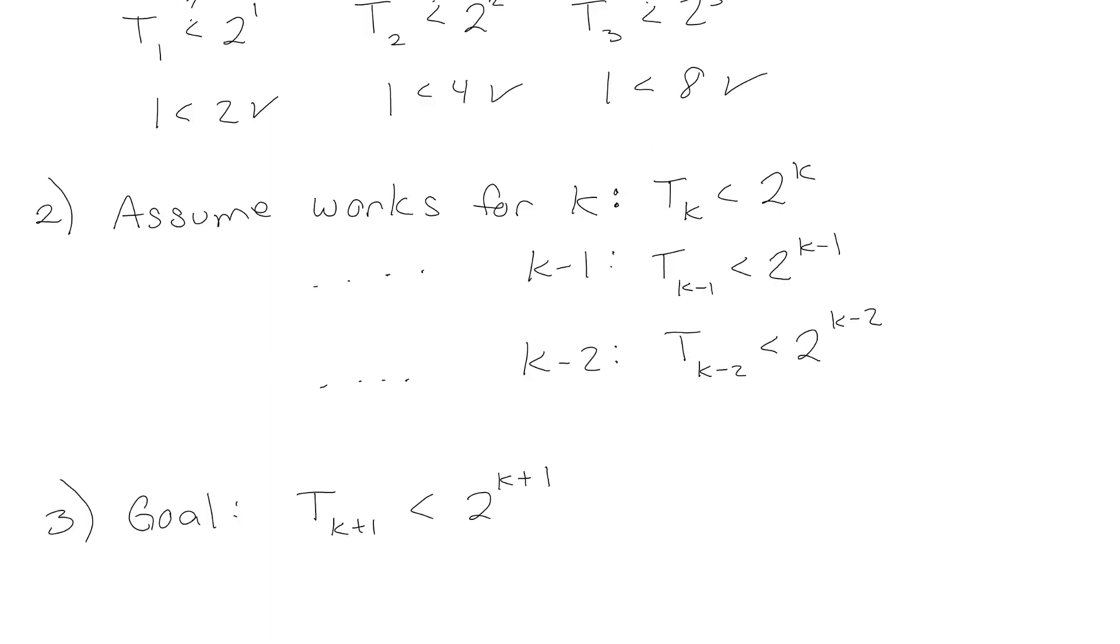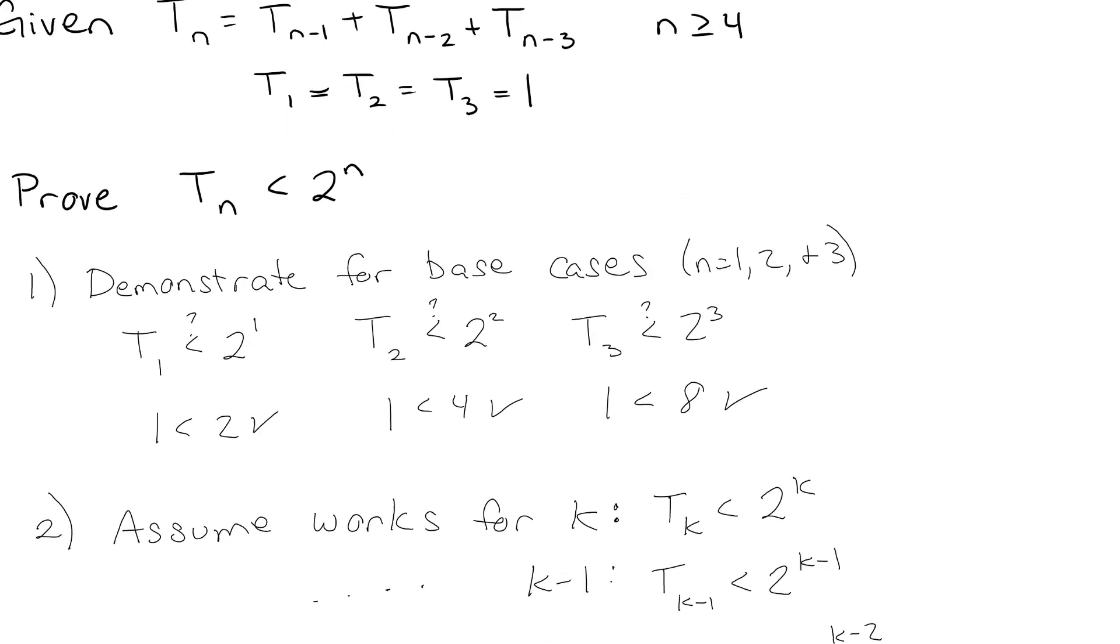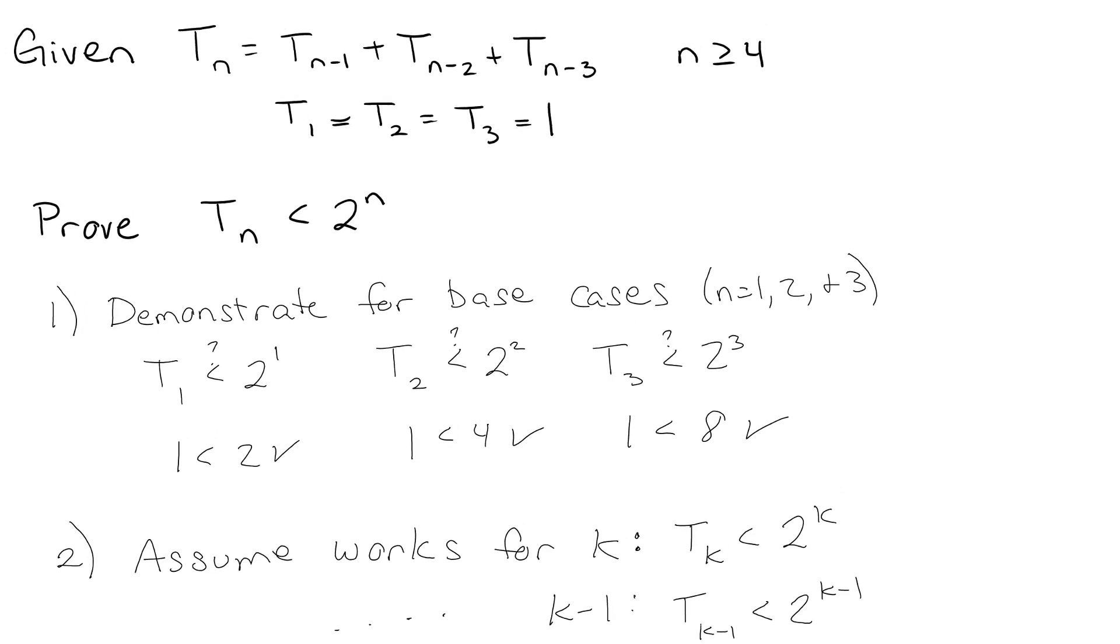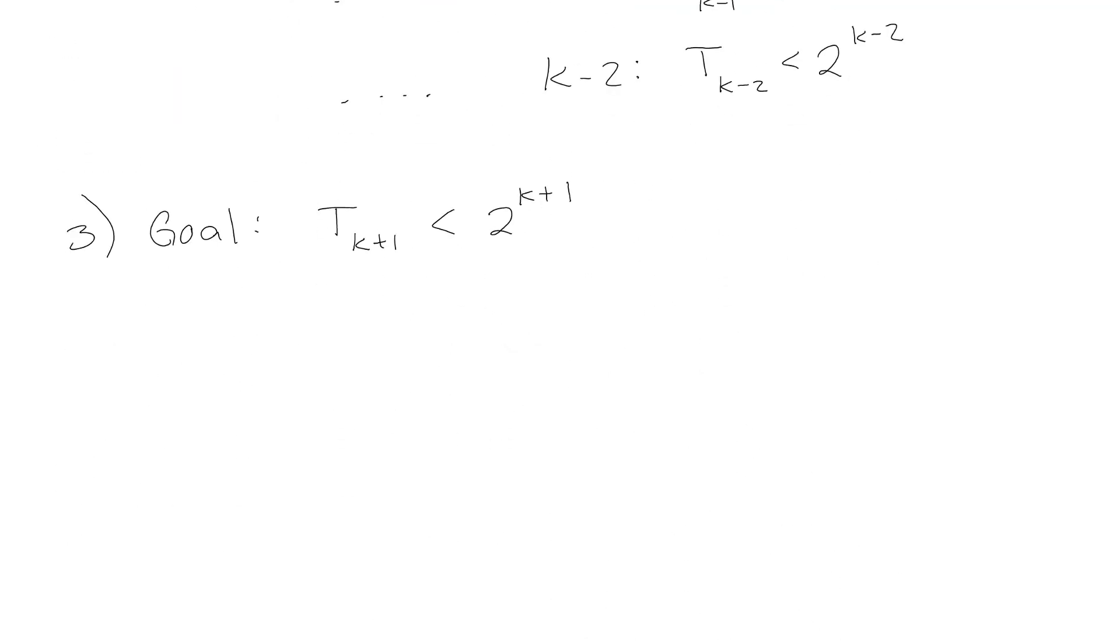So we need to go back and we need to look at our original recursive definition. So our original recursive definition is that wherever we are is equal to the sum of the three previous terms. So we're going to start with that. So we're going to say, okay, so we have T sub K plus 1. That's going to be equal to the sum of the three previous terms: K, K minus 1 and K minus 2.